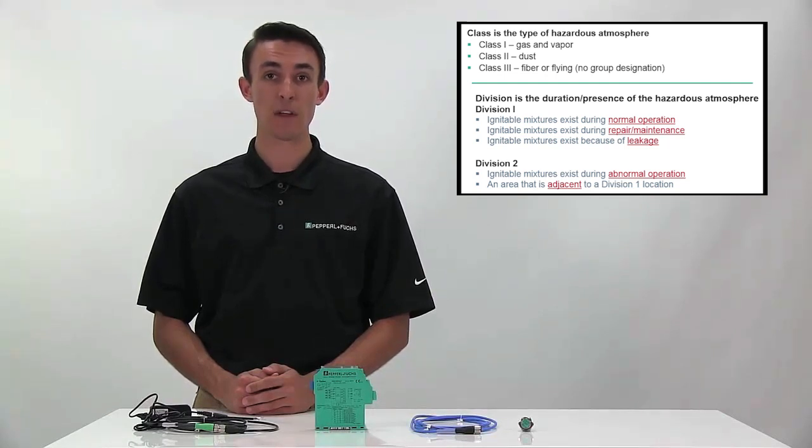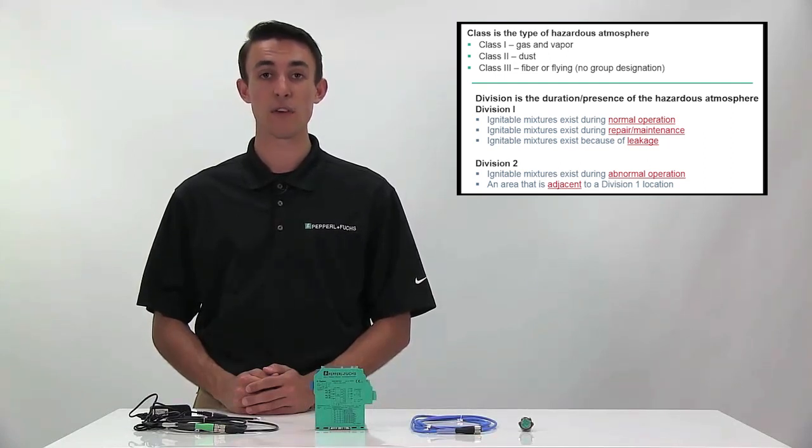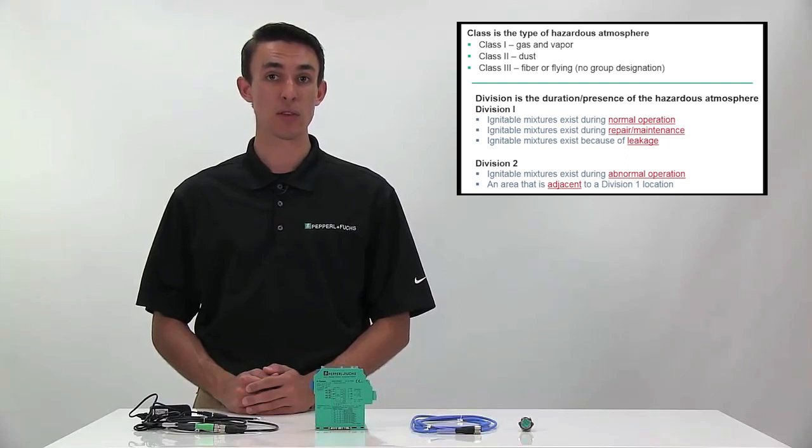Inductive sensors typically have either a 2-wire DC or a 2-wire DC NEMOR output and it is very important to denote the difference between the two. 2-wire DC NEMOR output inductive sensors are used in hazardous environments due to their low current and low voltage operating systems.